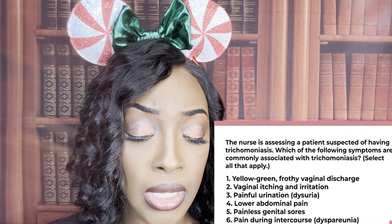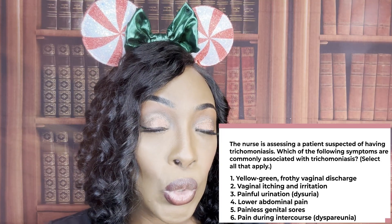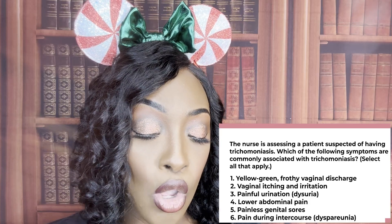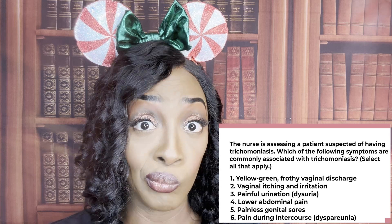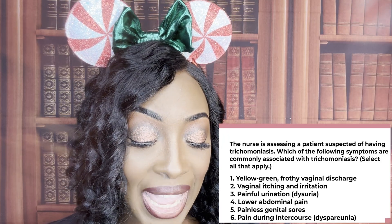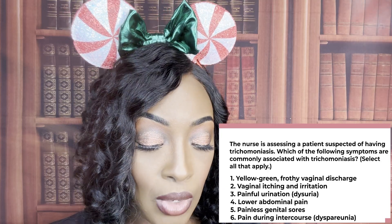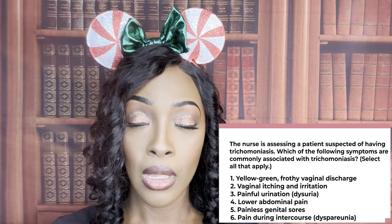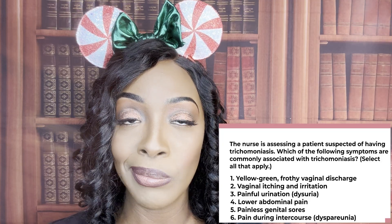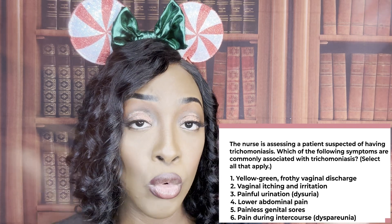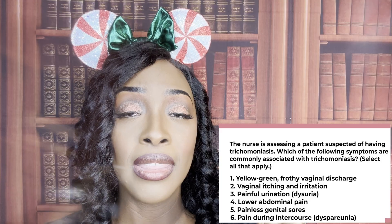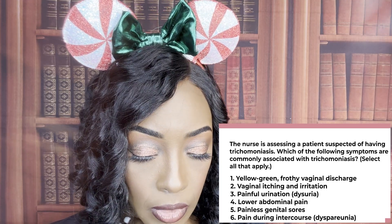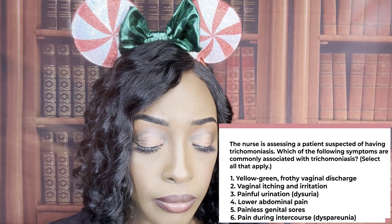The nurse is assessing a patient suspected of having trich. Which of the following symptoms are commonly associated with this infection? Select all that apply — treat each as true or false. One: yellow-green frothy vaginal discharge — true. Two: vaginal itching and irritation — false. Three: painful urination known as dysuria — true. Four: lower abdominal pain — true. Five: painless genital sores — false. Painless genital sores we'd see in something like syphilis — and by the way, for syphilis you also need to know the treatment is a high dose antibiotic. Six: pain during intercourse — true.